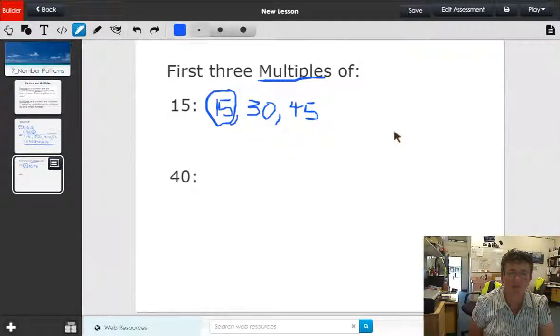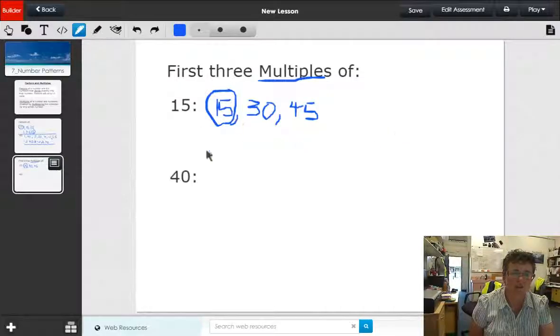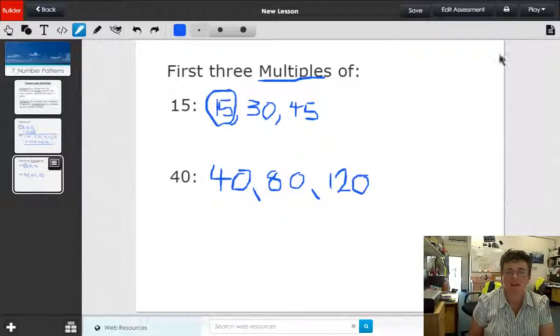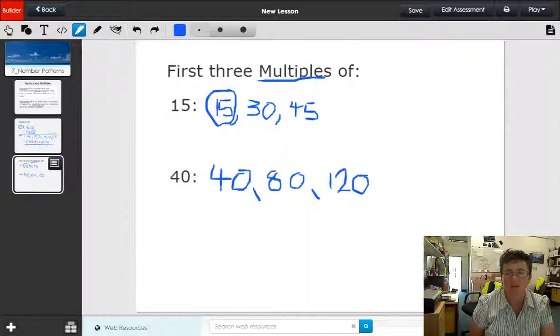So let's look at the first three multiples of 40. 40 times 1 is 40, 40 times 2 is 80, and 40 times 3 is 120. So that is the first three multiples of 40. That's multiples and factors. Hope you've got that one. You can rewind this and watch it again if you haven't.